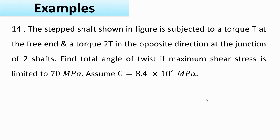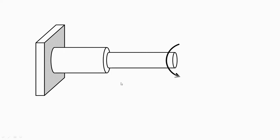In this video we'll see an example on step shaft. We have to find out the total angle of twist for the arrangement of the step shaft shown in the figure, if maximum shear stress is limited to 70 MPa and the value of G is 8.4 × 10⁴ MPa. So let us first see the arrangement.